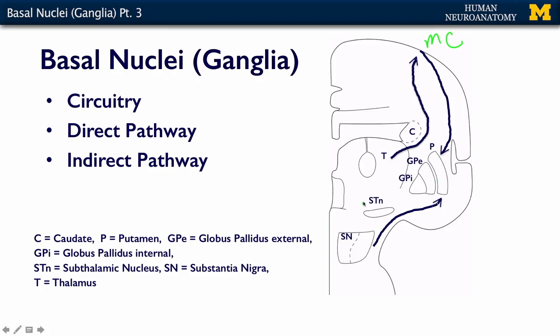There's another part of the brain called the thalamus, which is really important for both motor and sensory systems. It's a sensory relay — that third neuron in the three-neuron path for sensory sensations. It then sends information back up to motor cortex. There are two pathways I want you to be aware of.